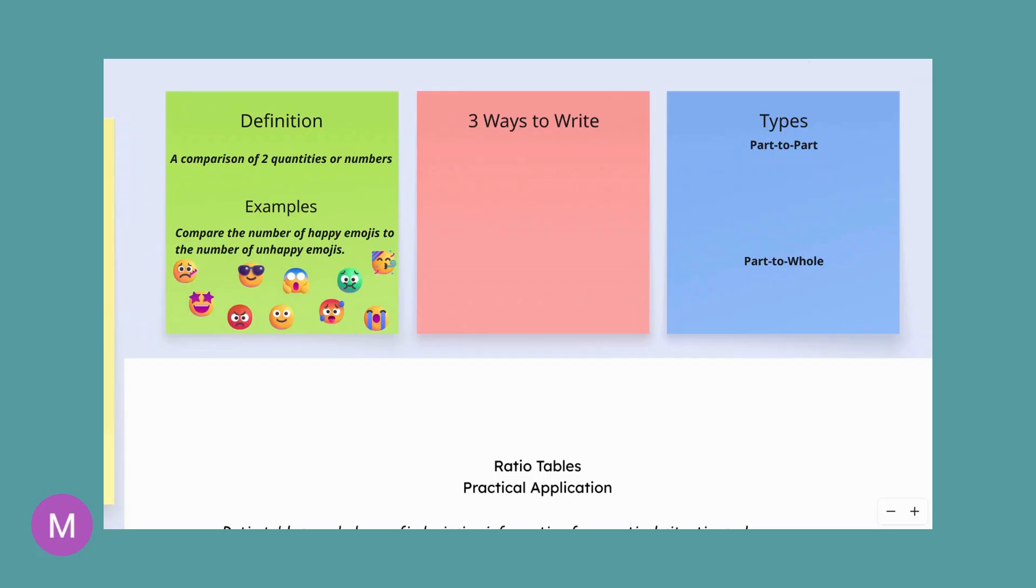We have the traditional way, which looks like a fraction. But how we say it is we have a number that we're comparing to another number. This fraction bar now means the word 'to'. You'll also see it written with a colon, so you'll have a comparison to another number, or you'll actually see it with the word 'to'.